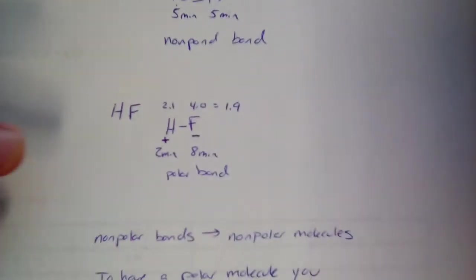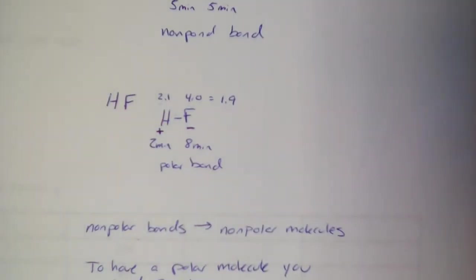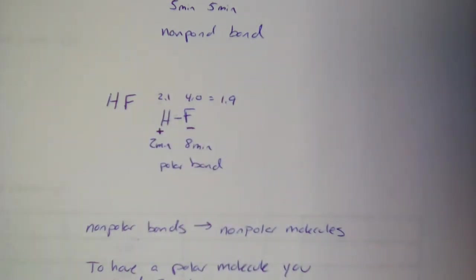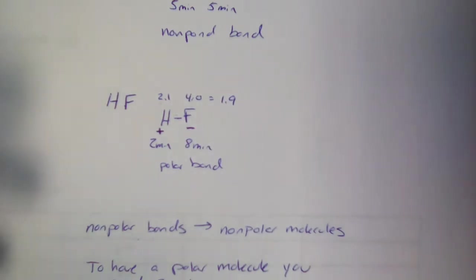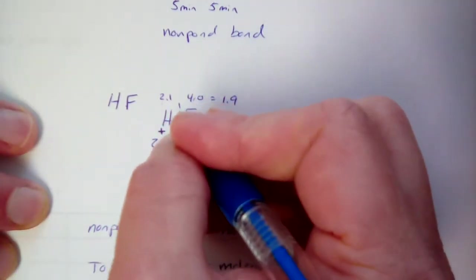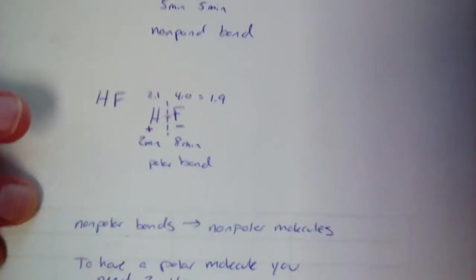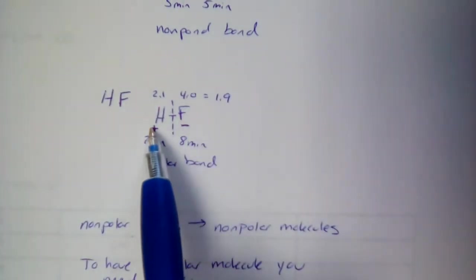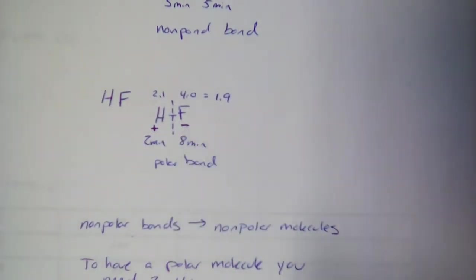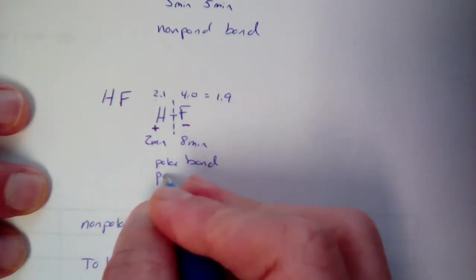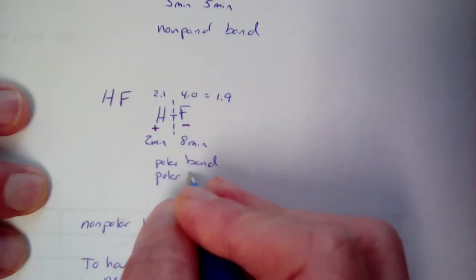HF is almost ionic — it goes right up to that upper limit. So the question is, how do we figure out if something has separation of charge? The answer is you try to draw a straight line through it. If you can put all the positive charges on one side of that straight line and all the negative charges on the other, then it's a polar molecule. For hydrogen fluoride, I would draw my line vertically — positive charge on one side, negative charge on the other — so this is a polar molecule.